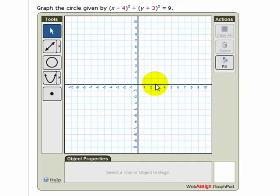To graph a circle using GraphPad, we need to have both the center of the circle and a point that's somewhere on the circle. We can use the radius to find such a point.